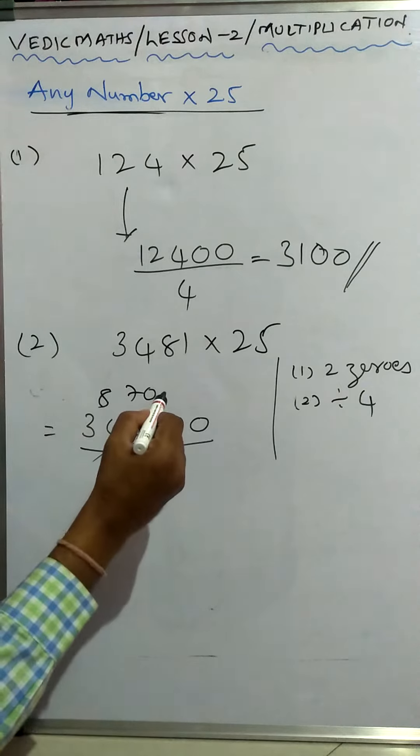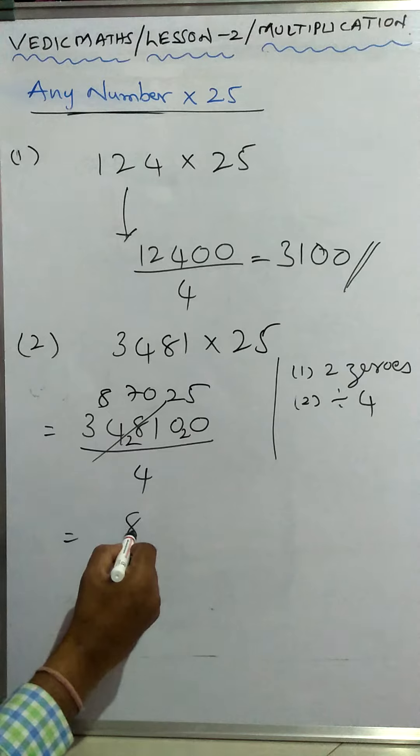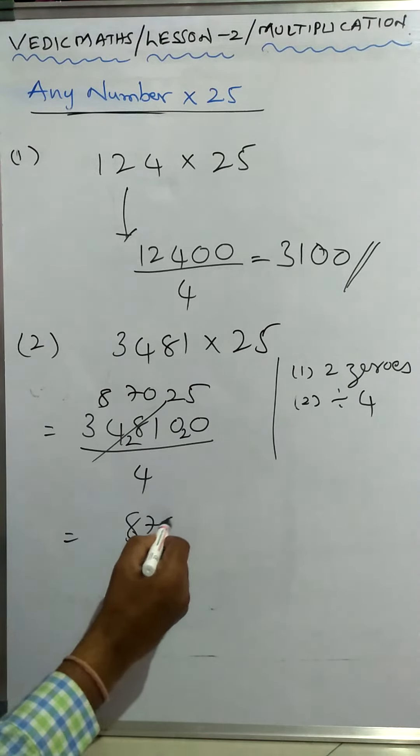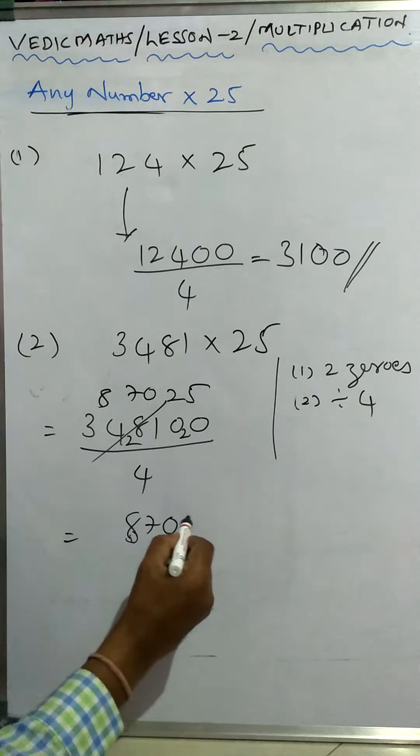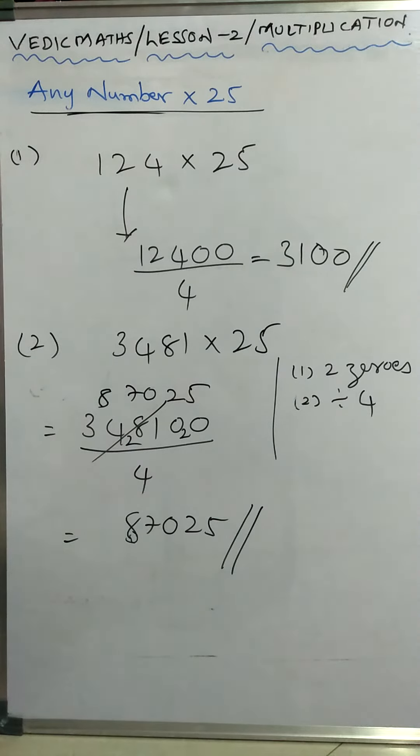Four two is eight, two four five zero four. Answer will become 87025. This will be the answer. Take some more examples.